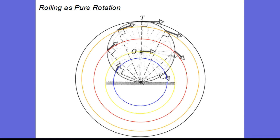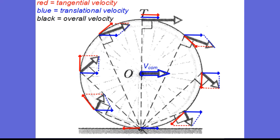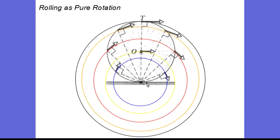We can show this vectorially by adding the tangential velocity shown in red with the translational velocity shown in blue at all different points on the wheel, using the parallelogram method of vector addition — drawing vectors tail to tail and taking the diagonal as the sum. In all cases the vector sums confirm that velocity magnitude increases from zero at the bottom up to twice VCOM at the top, then back to zero, while the direction of velocity also changes.